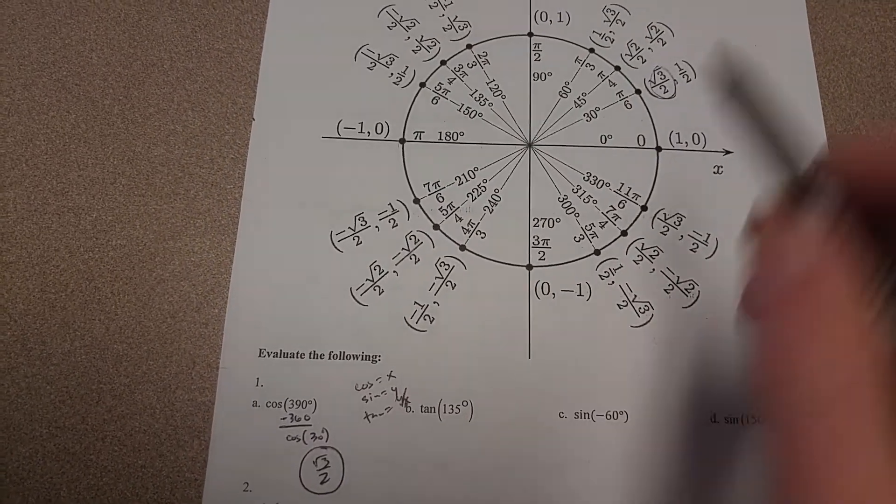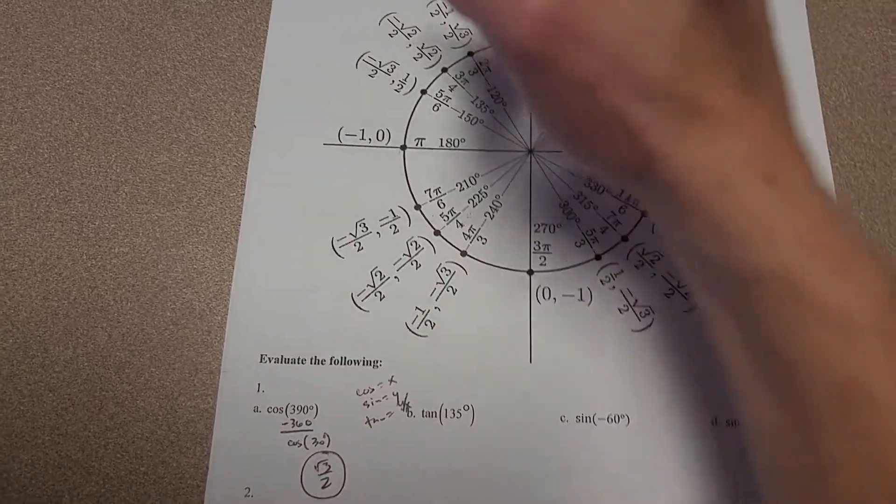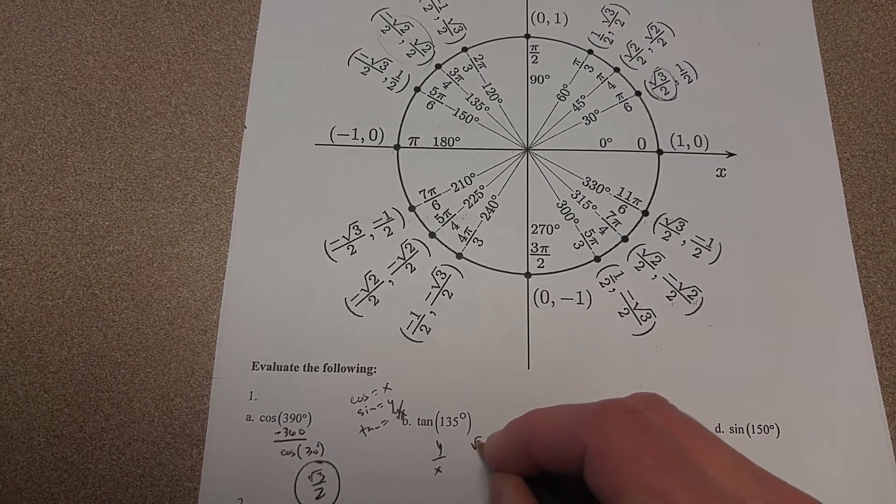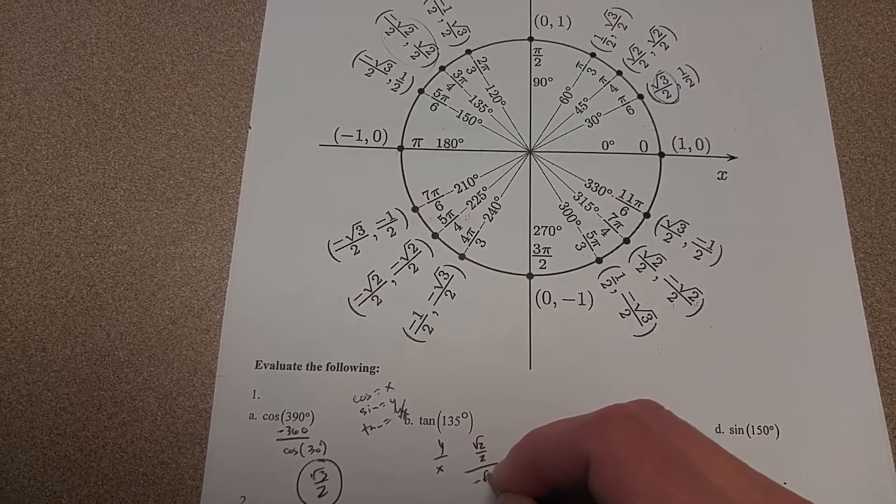The tangent of 135, so we find 135, which is right here. So I'm going to be doing the Y coordinate over the X coordinate, which is going to be positive root 2 over 2 over negative root 2 over 2.